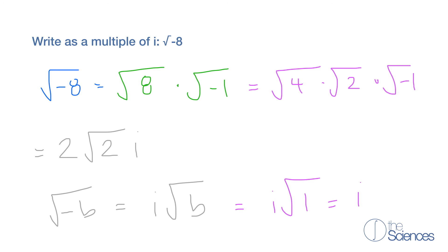So our answer is 2 times the square root of 2 times i. That's our answer.